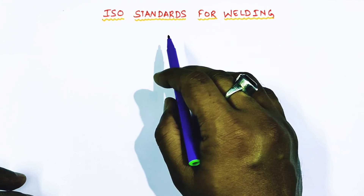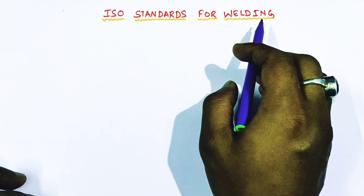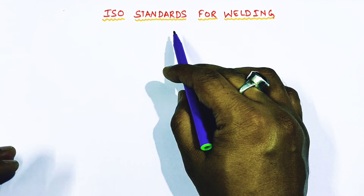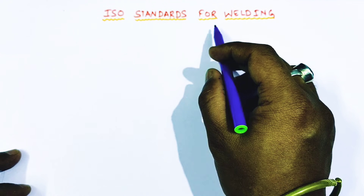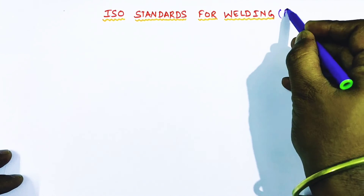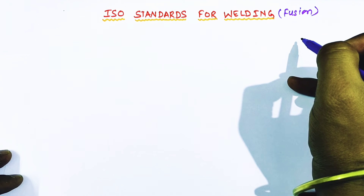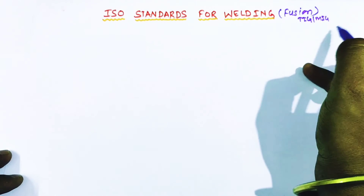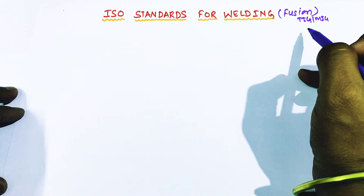Hello friends, welcome to my channel Welding and NET. My today's topic is ISO standards for welding. In ISO we have lots of standards, and particularly for welding there are also lots of standards. My focus will be on the most common and popular welding codes related to fusion welding, which includes all arc welding such as shielded metal arc welding, TIG welding, MIG welding, etc.